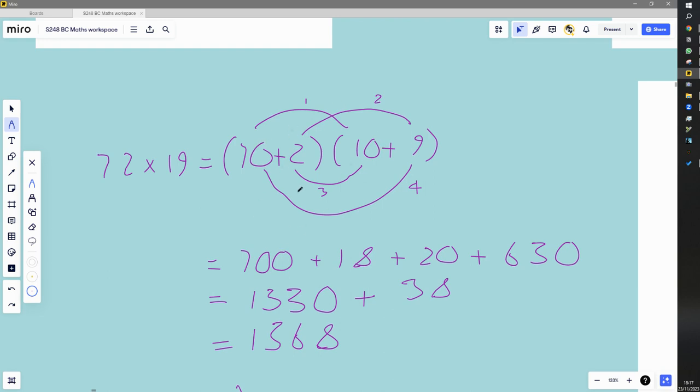And so the first term, 70 times 10 is 700. The second term, 2 times 9 is 18. The third, 2 times 10 is 20. And the fourth, 70 times 9 is 630. Then we add them all up.